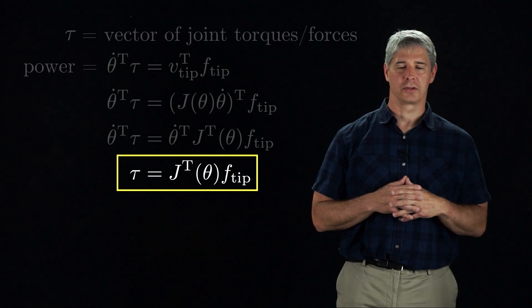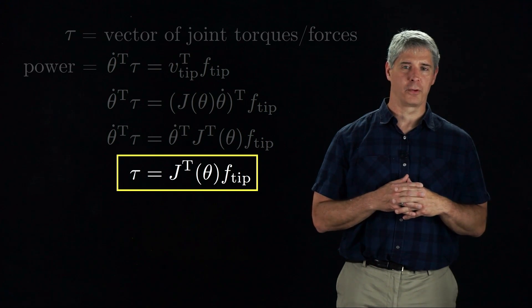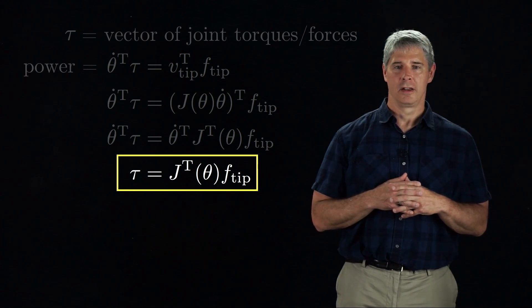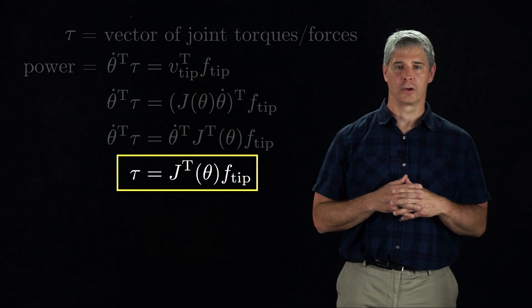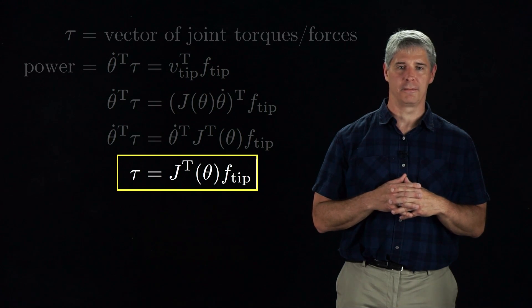This equation is useful for force control. If we want the robot to generate the force f-tip at its end effector, the motors must generate joint torques and forces equal to j transpose times f-tip.